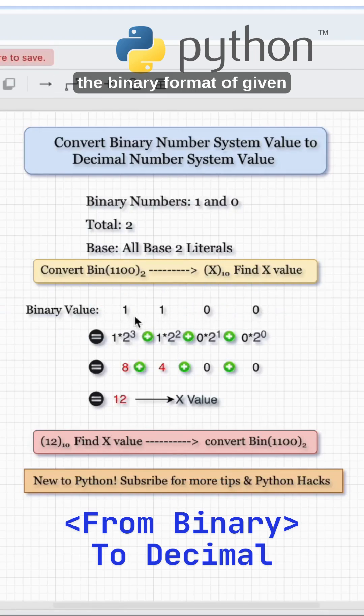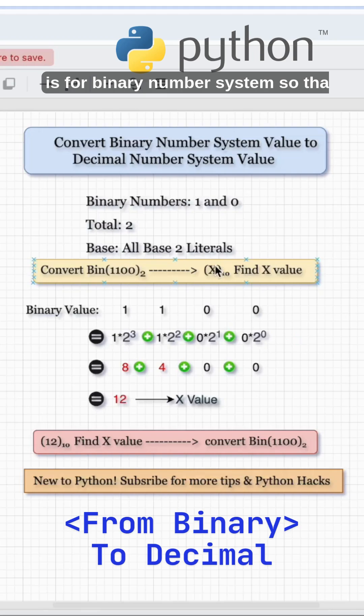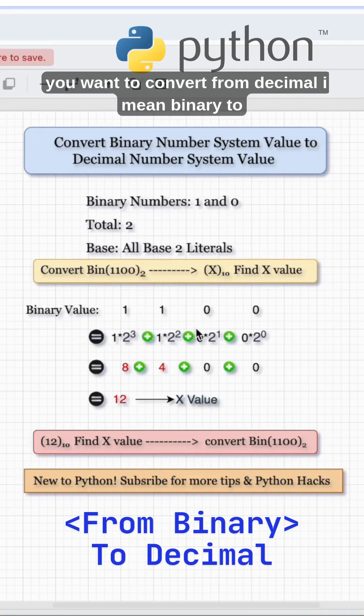Here we can see the binary format of a given number, and we want to find out the decimal number for that. Base 2 is for binary number system. That means 0 into 2 to the power of 0, 0 into 2 to the power of 1, 1 into 2 squared, and 1 into 2 cubed. This is how you calculate when you want to convert from binary to decimal.